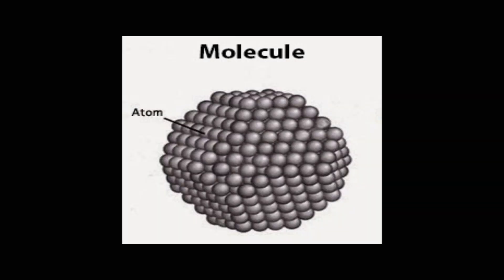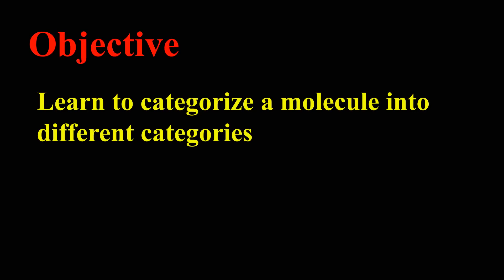We know that a molecule is made from two or more atoms. In this video, we will learn to categorize a molecule into different categories based on number of atoms and type of atoms.